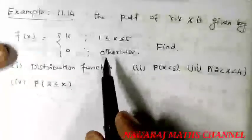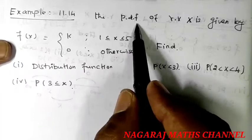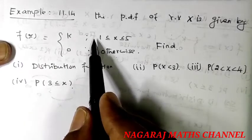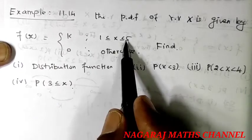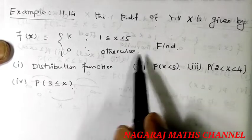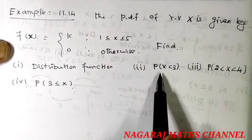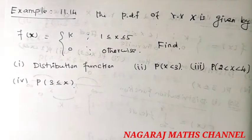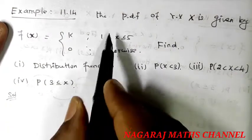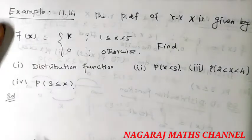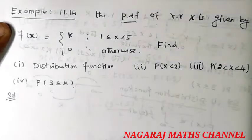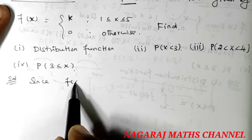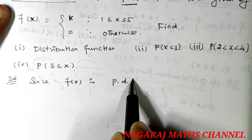Hi students, welcome to my channel. You have Example 14. The probability density function of random variable X is given by f(x) = k, where x varies from 1 to 5, and 0 otherwise. Find: first, the distribution function; second, P(X < 3); third, P(2 < X < 4); and P(X ≥ 3). This will be the probability density function.